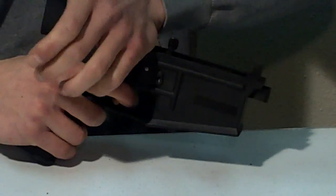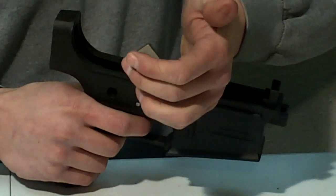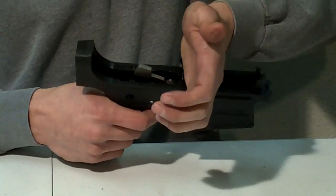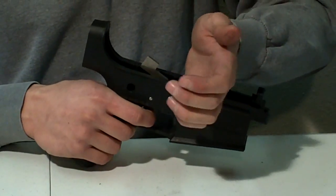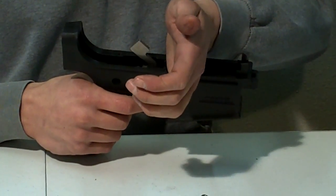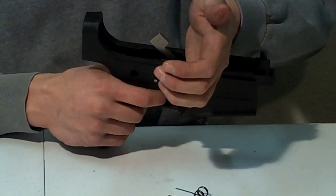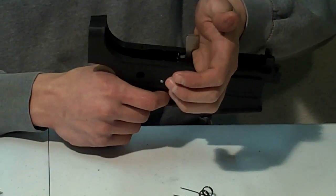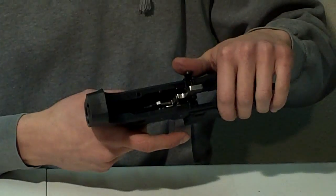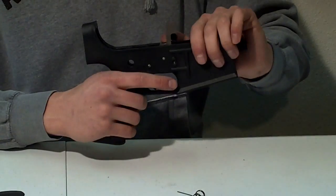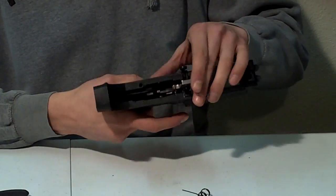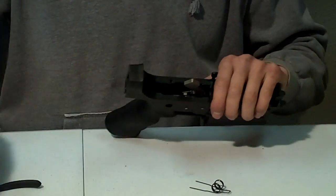Then you want to test your trigger. Make sure everything works correctly. Go ahead and pull your trigger and set your hammer all the way back. Engage the disconnector. Release your trigger. Make sure it goes up and goes on to the sear. And then pull the trigger. Make sure everything works correctly.